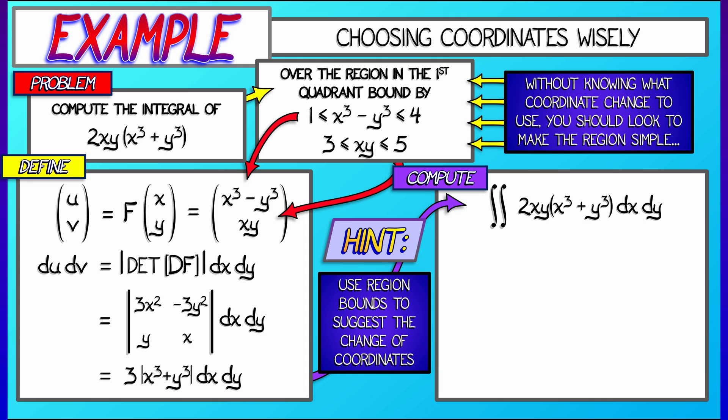So to integrate 2xy times quantity x cubed plus y cubed dx dy in our new u and v variables, the first thing I'm going to do is note that the limits of integration are going to be great. u is going to go from 1 to 4, v is going to go from 3 to 5. But I still need to transform the integrand and, oh, look at that. Oh, there's an x cubed plus y cubed sitting right there. And that means when I do the substitution, I'm going to get 2 thirds v du dv.